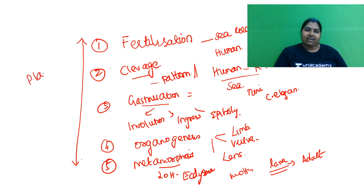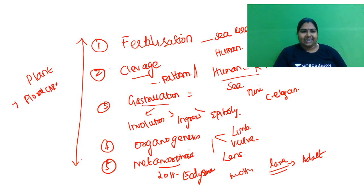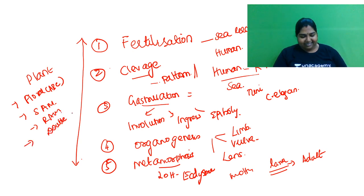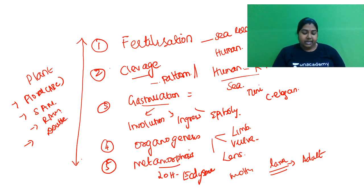In plant development, you have to study about floral development. You have your ABC flowering pattern, then what is your shoot apical meristem and root apical meristem, and you must focus on double fertilization.